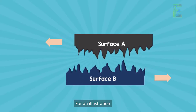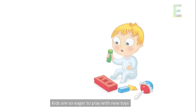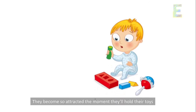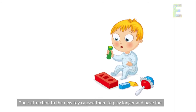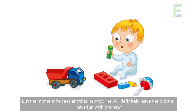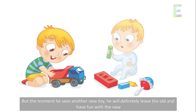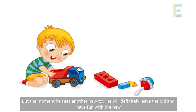For an illustration: kids are so eager to play with new toys. They become so attracted the moment they hold their toys. Their attraction to the new toy causes them to play longer and have fun, but the moment a child sees another new toy, they will definitely leave the old one and have fun with the new.